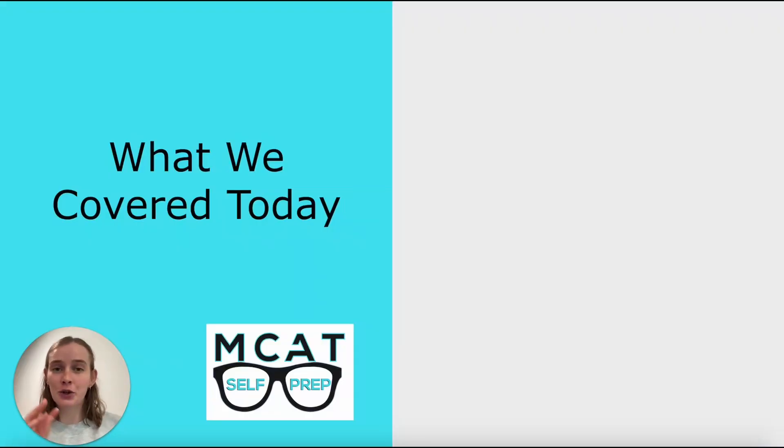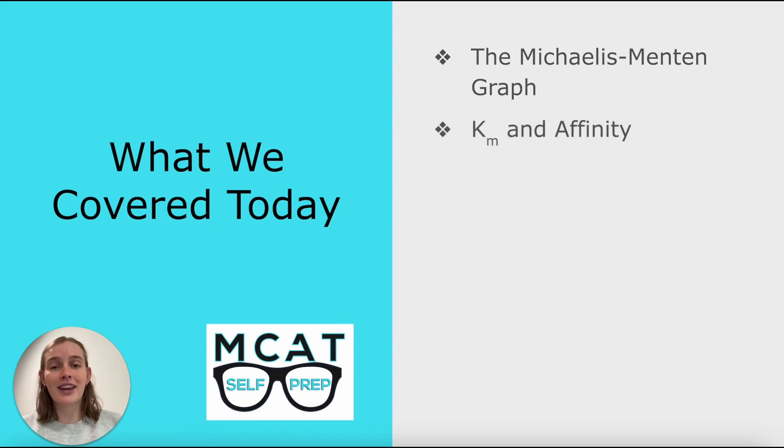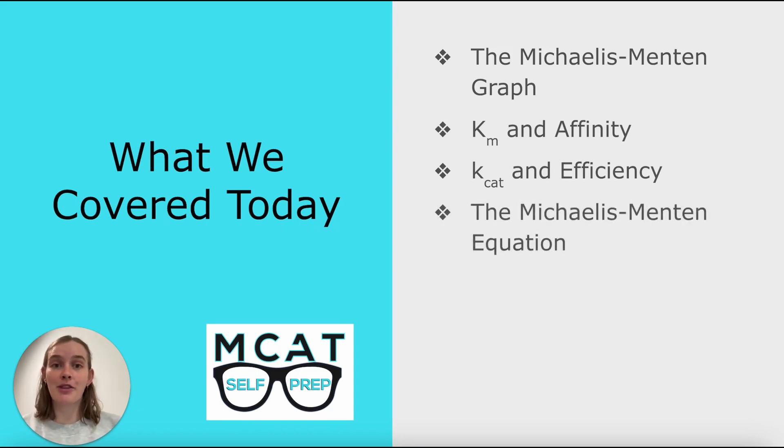We're going to talk just a quick summary of what we covered today. It was a lot. So thank you for bearing with me. We covered the Michaelis-Menten graph, as well as all of the parameters you need to know associated with it. We covered Km and affinity and their inverse relationship, as well as Kcat and efficiency. We finished up talking about the Michaelis-Menten equation, make sure to memorize that one, as well as the Lineweaver-Burk plots and our four different types of inhibition.